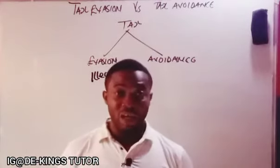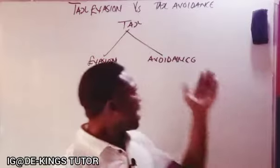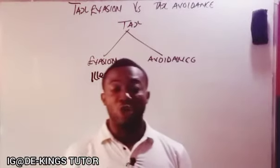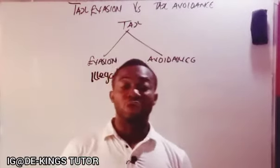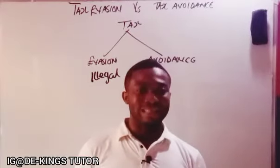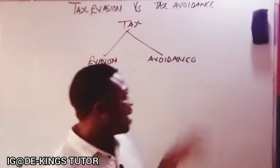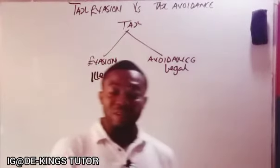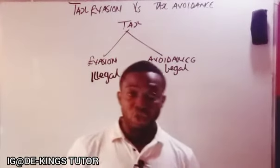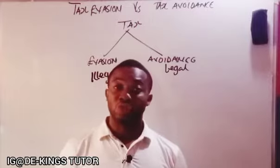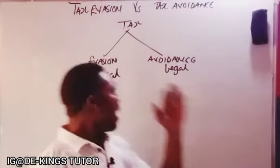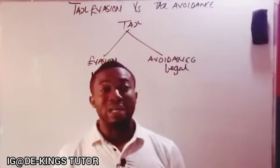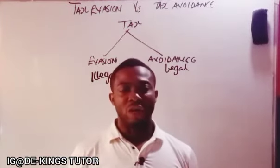Tax avoidance, on the other hand, is using your knowledge of taxation to reduce the amount to be paid as tax. This is legal. So tax avoidance means legally reducing the amount of tax you pay, while tax evasion means an outright refusal to pay tax.